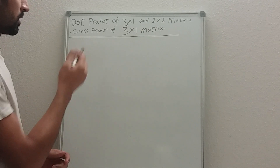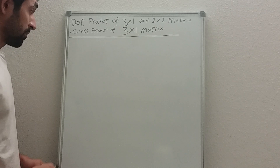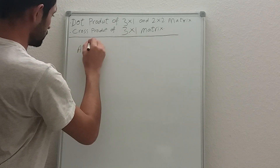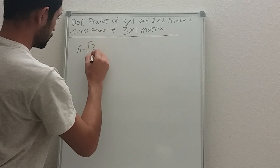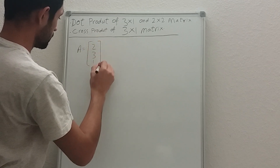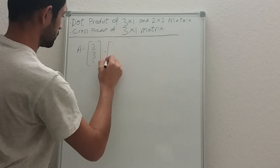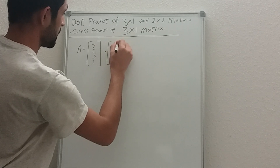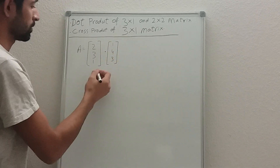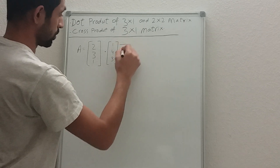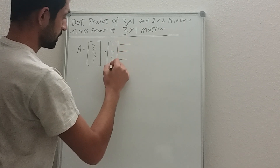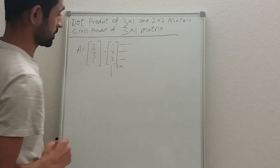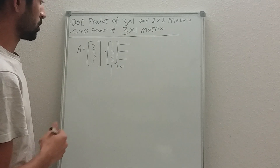Let's say we have matrix A equal to two, three, one dot one, four, three. This is our three-cross-one matrix — we have three rows and one column. So how can we do the dot product for this matrix?